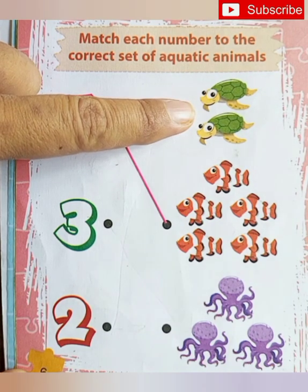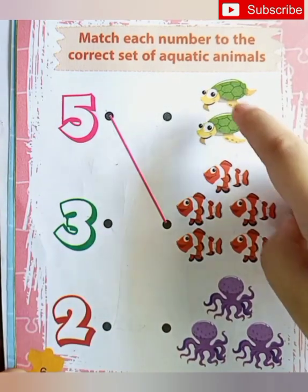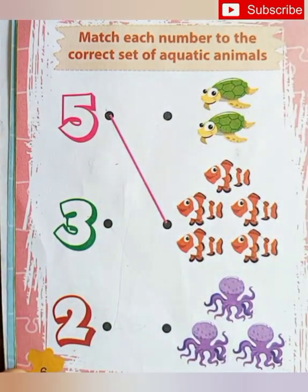Which animal it is? Turtles. Turtles. How many? 1, 2. Where is number 2?